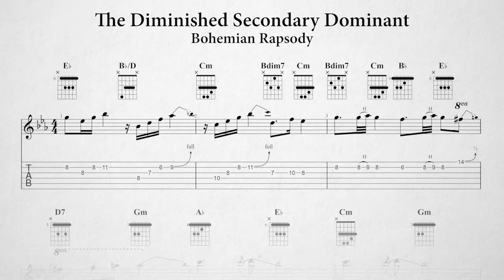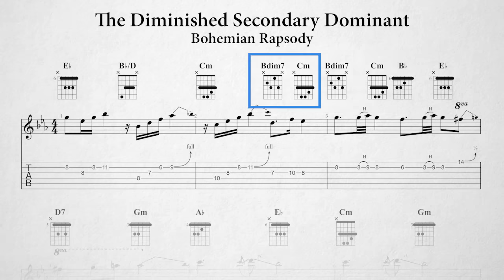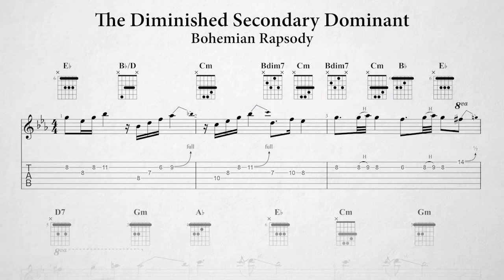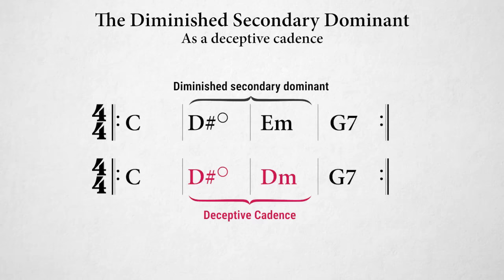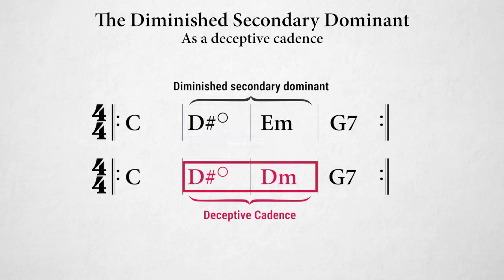Revisiting the outro of Bohemian Rhapsody in the key of E flat: Freddie Mercury uses the diminished secondary dominant for the sixth degree C minor — namely the B diminished seventh chord. The note B is a semitone lower than the root of C minor. We can also use the diminished chord as a deceptive cadence. In this progression in C major, the D sharp diminished seventh chord should resolve a half step up to E minor — the V of III — but if we replace the E minor seventh chord with a D minor seventh chord, we have a very nice deceptive cadence.